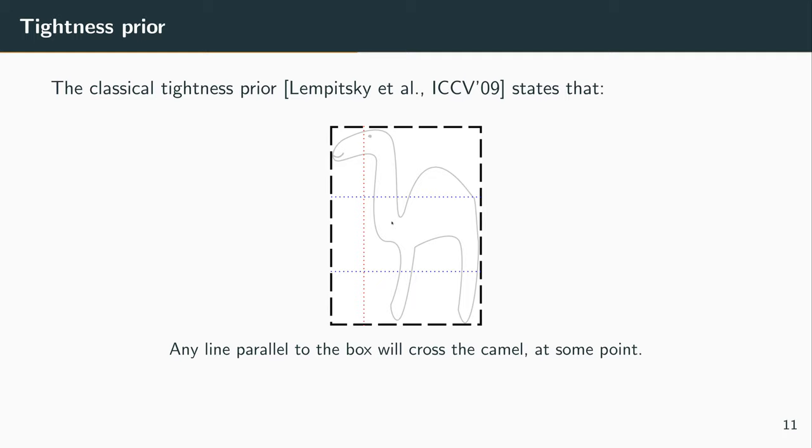So the tightness prior, introduced by Lempitsky at ICCV 2009, states that given a sufficiently tight bounding box, then any line parallel to the box edges, so any horizontal and vertical line, will have to cross the object at least at some point. We can see here easily,